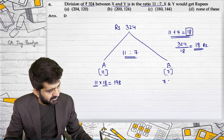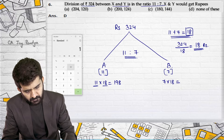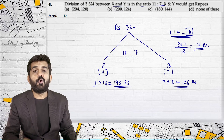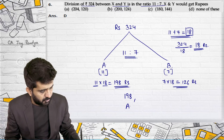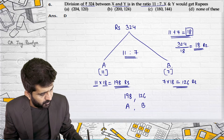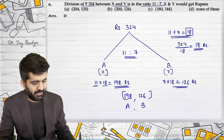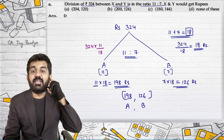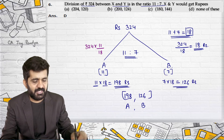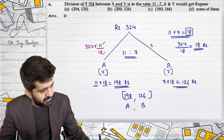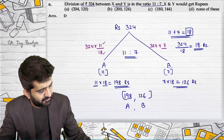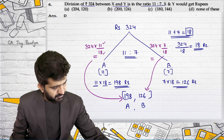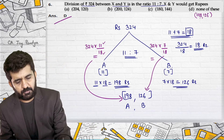B is getting 7 parts of 18 rupees each, which is 126 rupees. So 198 rupees should be given to A and 126 rupees to B. As a shortcut: A gets 11 out of 18 parts of 324 rupees, and B gets 7 out of 18 parts of 324 rupees. The answer remains 198 and 126. The correct answer should be 198 and 126; D is the correct answer.